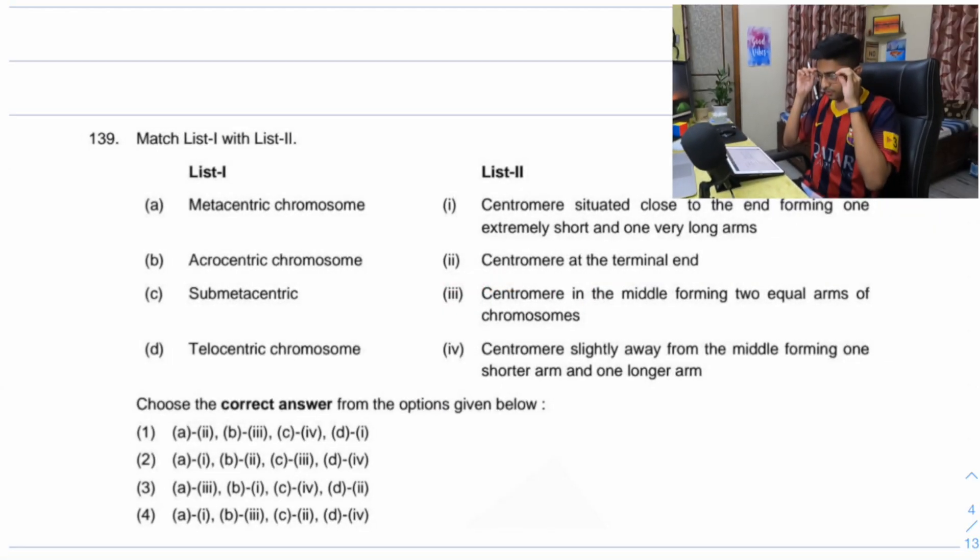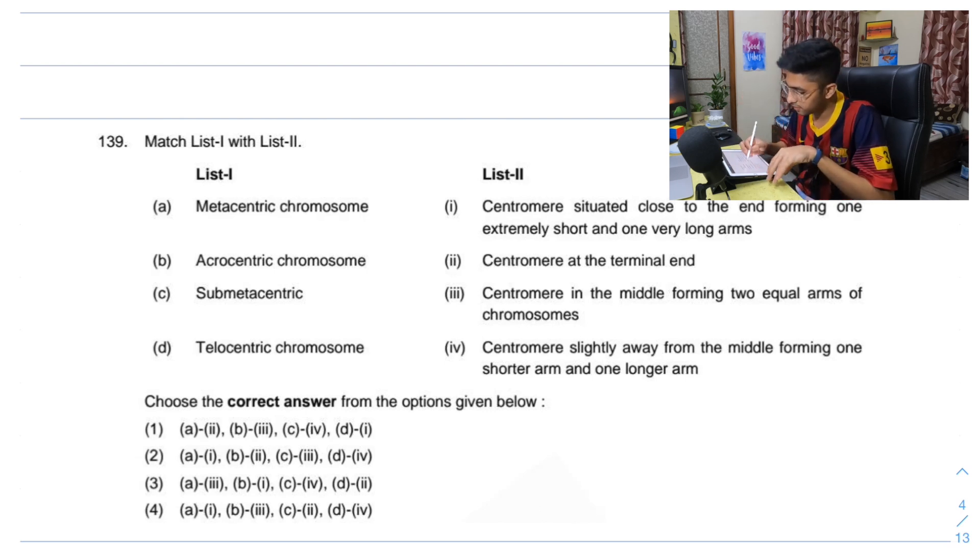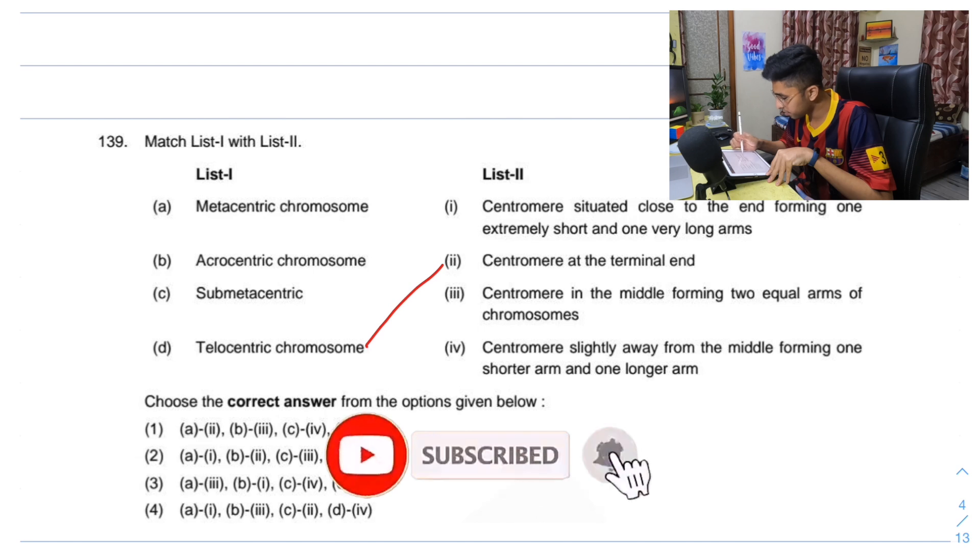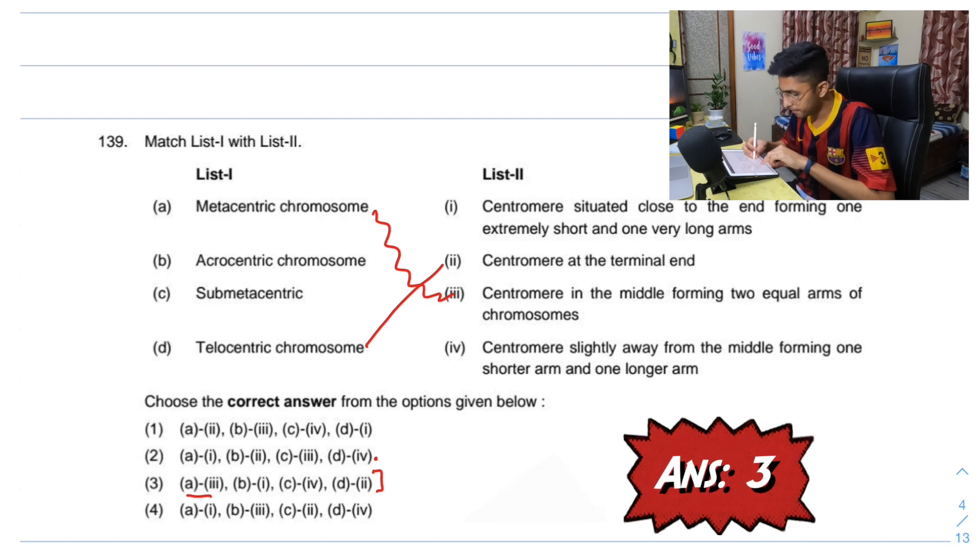Chromosomes. I should be comfortable here. Metacentric chromosome, acrocentric, telocentric. Telocentric is the easiest - it's the centromere at the end, centromere at terminal end. Only one option. Centromere slightly away from the middle, forming one short arm and one long arm. So metacentric is equal, two equal arms. So A is three. Acrocentric is one - centromere situated close to end forming one extremely short and one extremely long. C is submetacentric which is four - centromere slightly away from the middle, forming one shorter and one longer arm. That's the right one then.